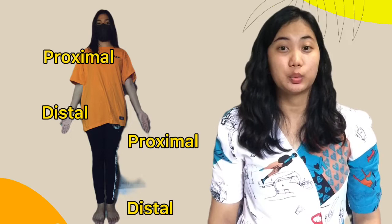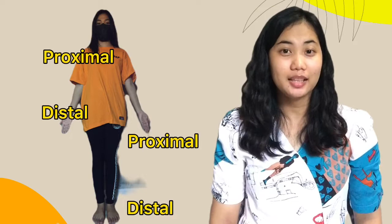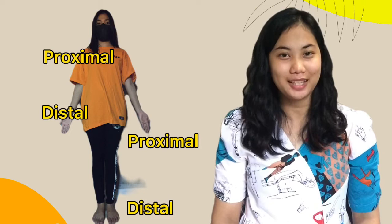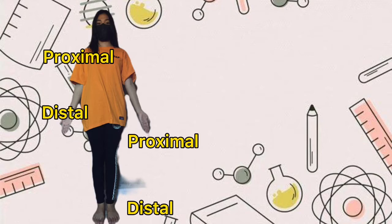Next, we have proximal and distal. When we say proximal, it is closer to where the arm or leg inserts into the body. When we say distal, it is farther away from where the arm or leg inserts into the body. Remember that we only use the proximal and distal terms when describing two points on the same limb — the arm or leg.